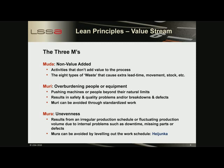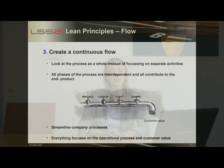Mura, or unevenness, is the second difficulty that can cause serious problems, leading to downtime and quality issues. We can remove Mura by leveling out the workload over the different operations and by removing bottlenecks.